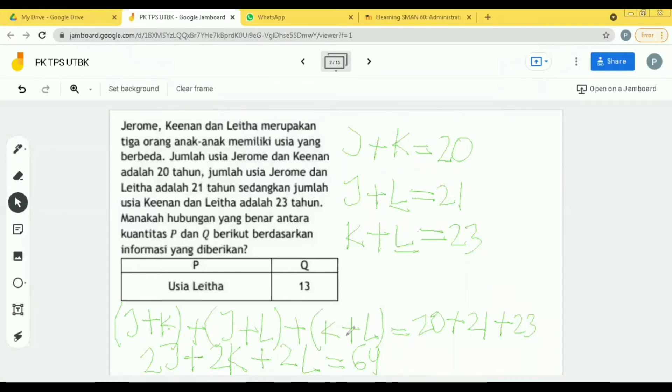Sampai sini ada yang mau tanya dulu nggak? Cukup jelas? Saya hapus sebelah sini ya. Oke. Kalau yang kiri, saya tulis begini. Boleh nggak sih kalau saya tulis begini? Boleh, Pak. 2 kali JKL sama dengan 64.